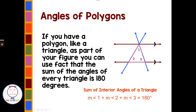If you have a polygon like a triangle as part of your figure, you can use the fact that the sum of interior angles of every triangle is 180 degrees. Here we have a triangle in the middle with angles 1, 2, and 3, and they add up to 180 degrees. Hope that helps with parallel lines — have a great day!